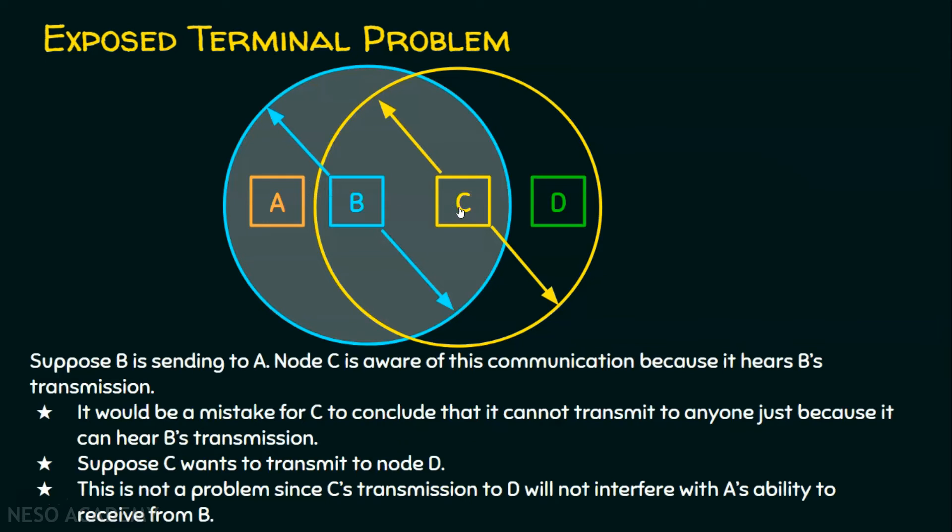Because whatever C is going to transmit, it is going to transmit to D, and its coverage range is up to this. So, whatever C is going to transmit to D is not going to affect A,